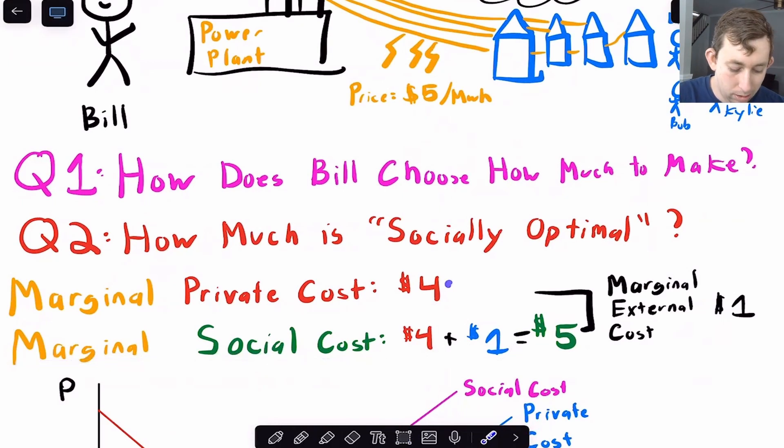So that's the social cost to generate one unit of electricity, not just the $4, which is the only cost that Bill cares about. And so this difference between the marginal private cost and the marginal social cost, it's a dollar, but we call it the marginal external cost. So if you can keep that example in mind, I think it's going to be straightforward when we move to a supply and demand diagram.